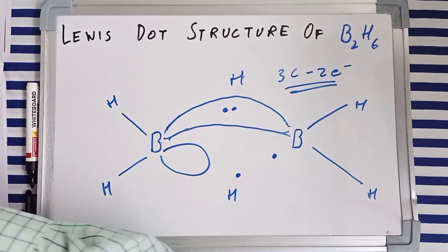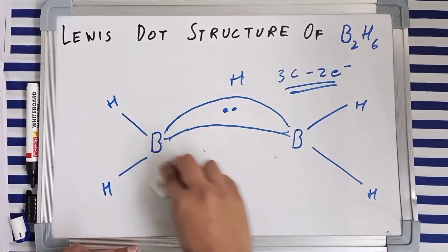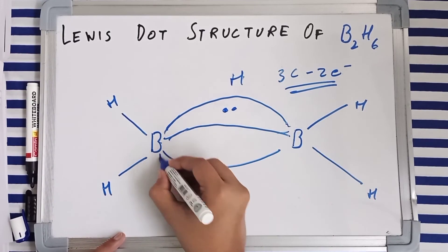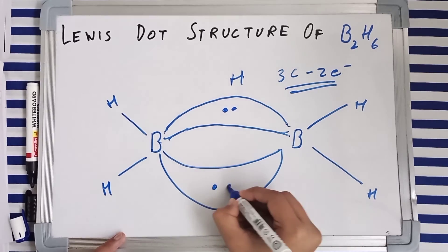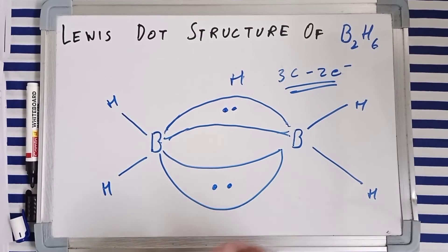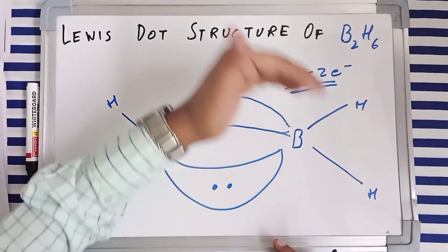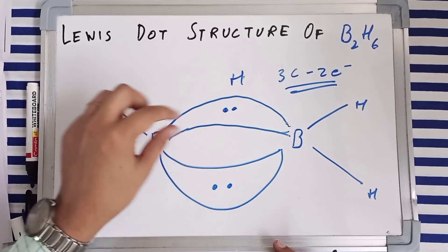Similarly, here also it is represented like this. So this is the structure of B2H6 and there are two banana bonds. And the system is three-centered two-electron system.